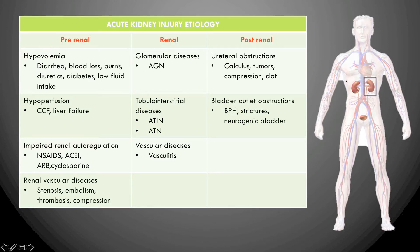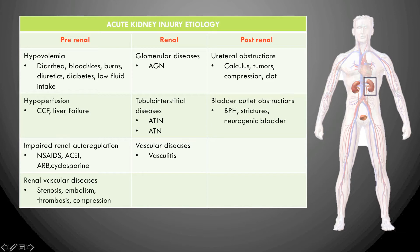The causes of acute kidney injury are grouped into three categories: pre-renal, renal, and post-renal. Pre-renal causes are those occurring before the kidney — for example, cardiovascular causes where the heart cannot pump blood properly, leading to reduced blood flow to the kidney. The kidney requires a continuous and substantial blood supply, so reduced flow leads to hypovolemia.